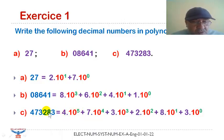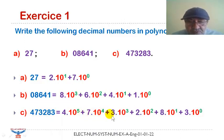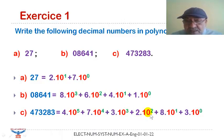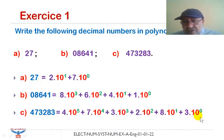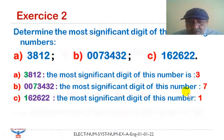For 473283, we have ranks zero through five, so we have four multiplied by ten to the power five, plus seven multiplied by ten to the power four, plus three multiplied by ten to the power three, plus two multiplied by ten to the power two, plus eight multiplied by ten to the power one, and finally plus three multiplied by ten to the power zero.